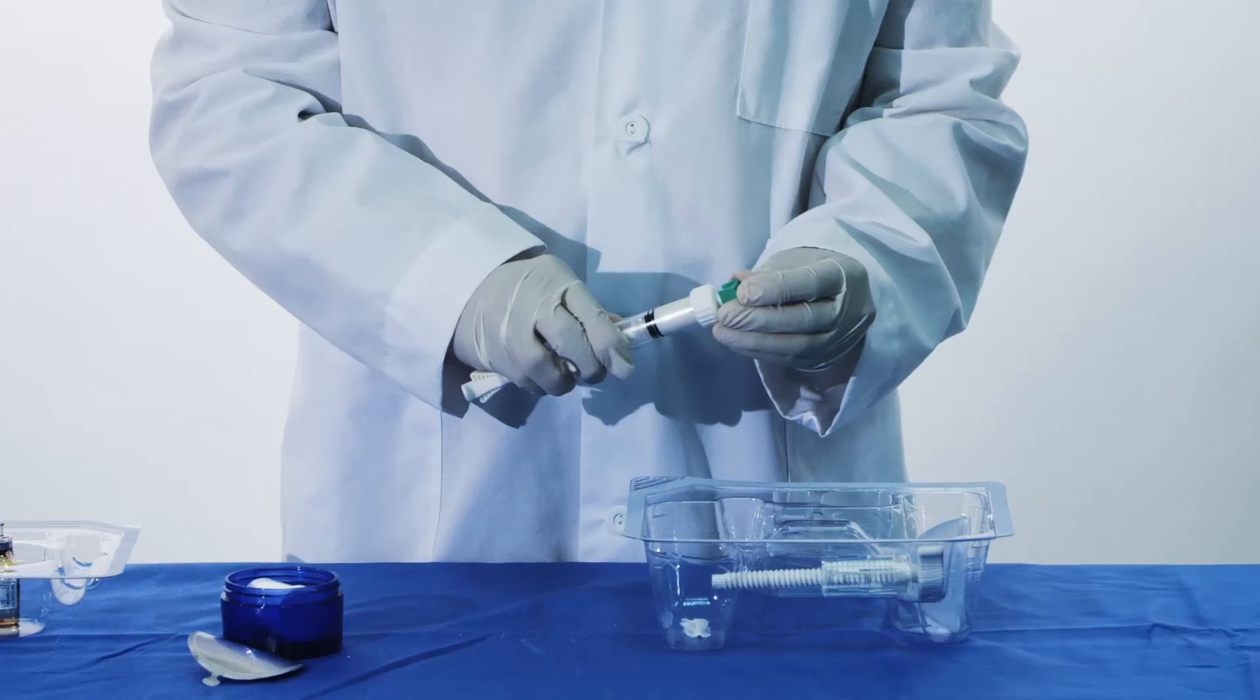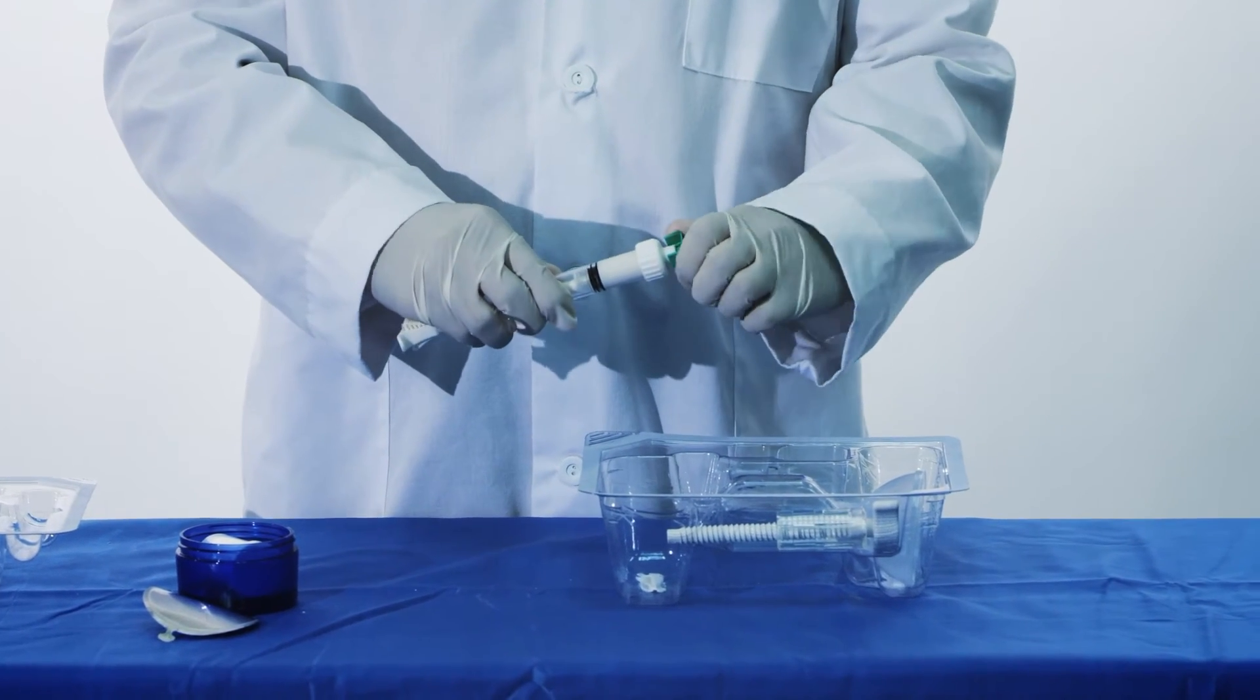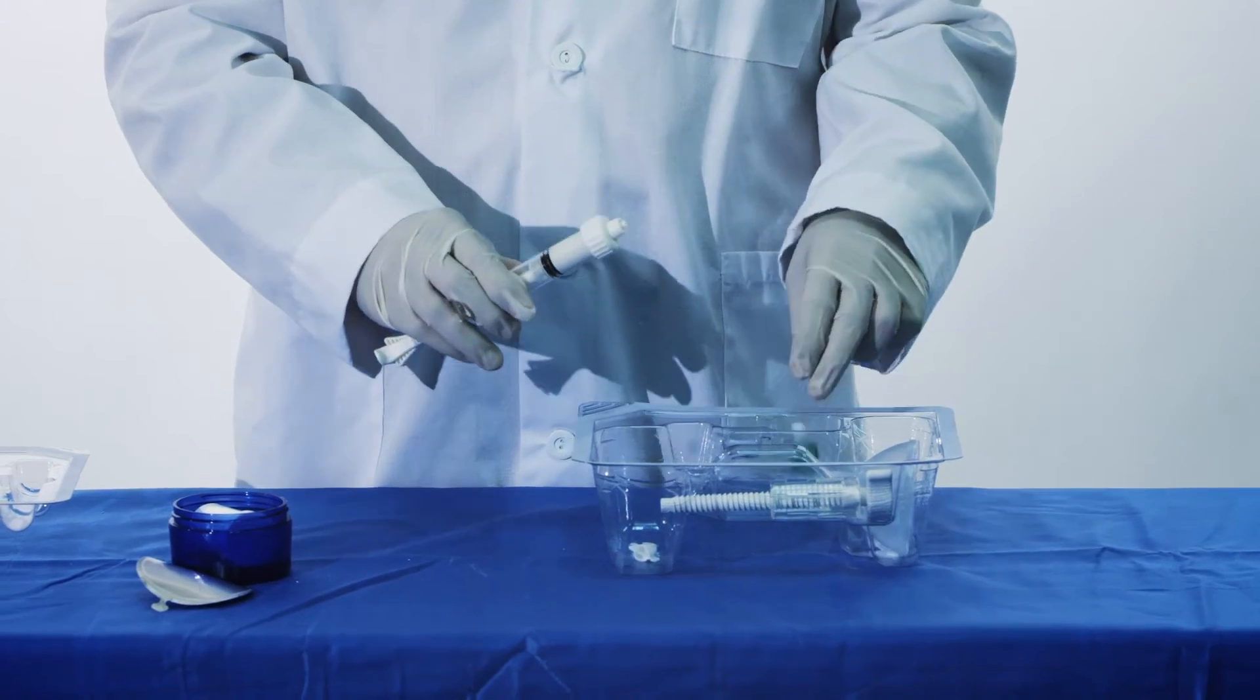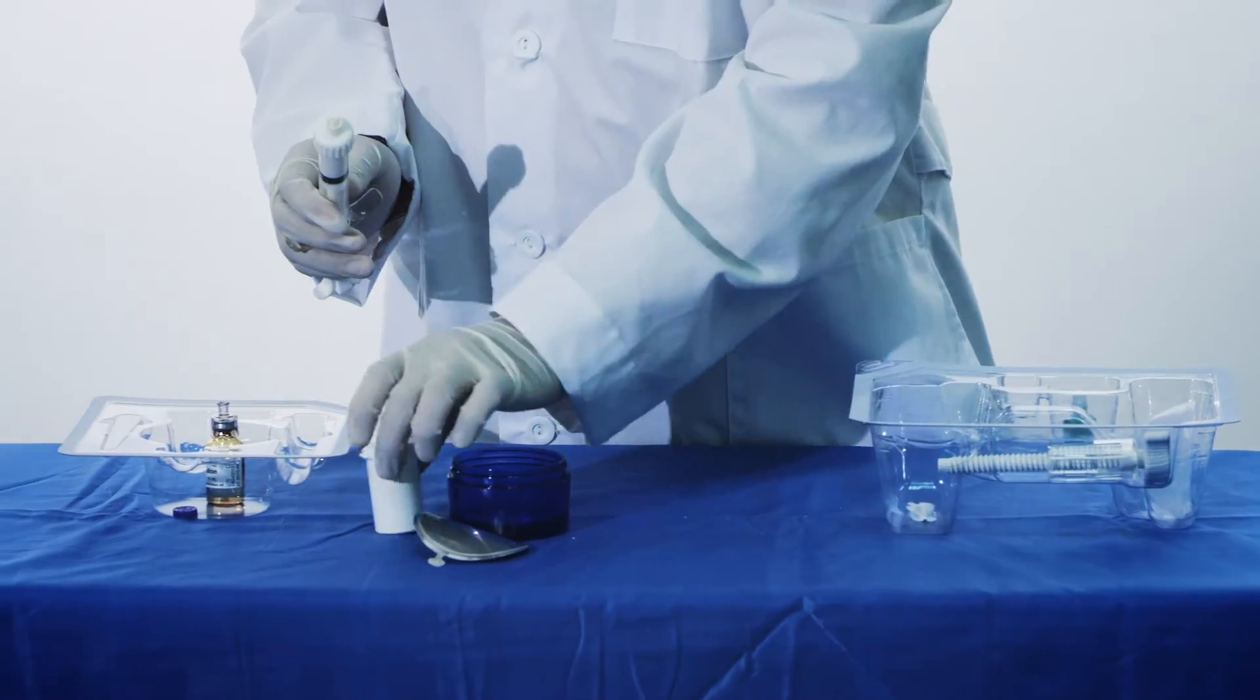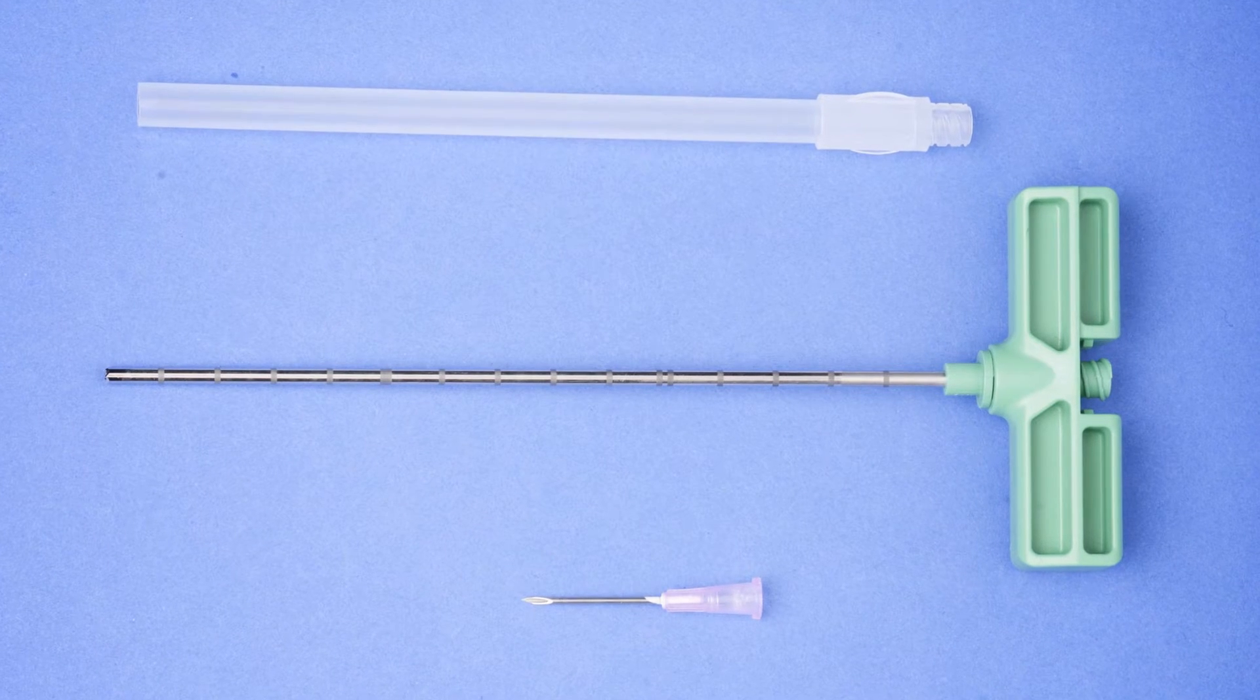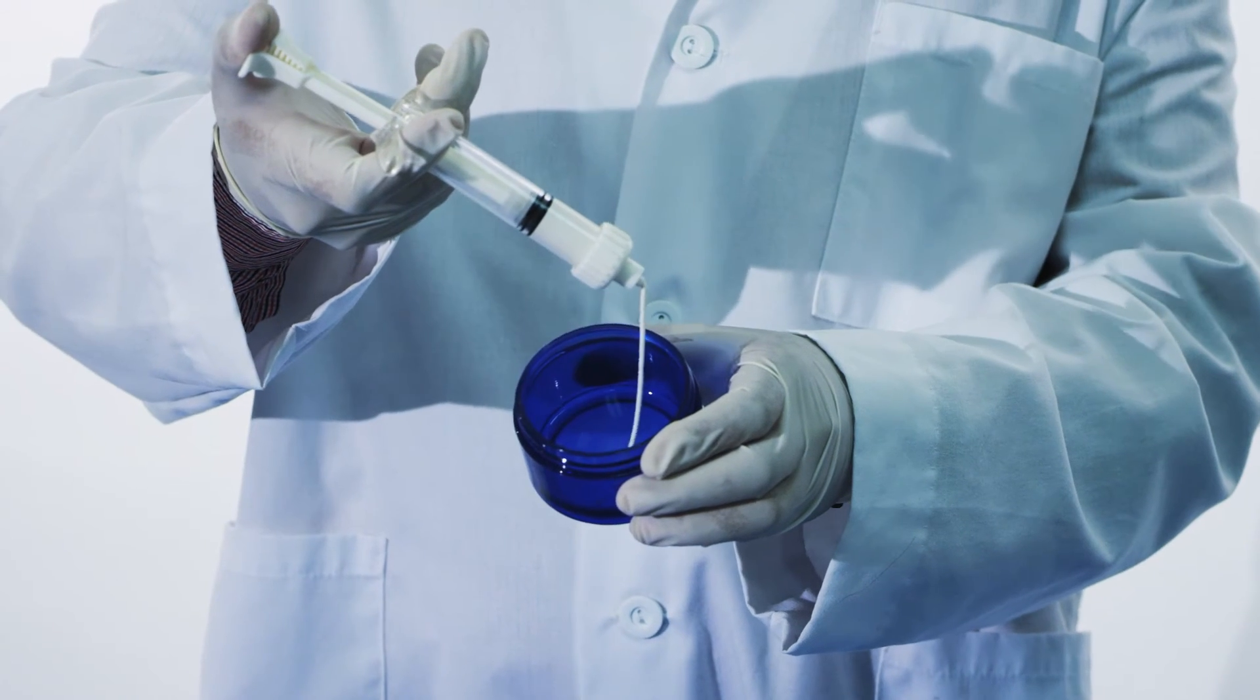Pull back the stopper slightly to reduce pressure and remove the green connector. The bone substitute material is now ready for use. Attach a luer compatible device and inject material as needed.